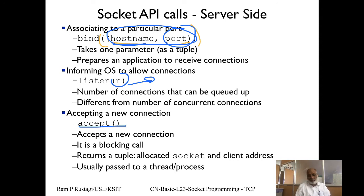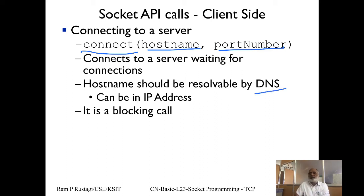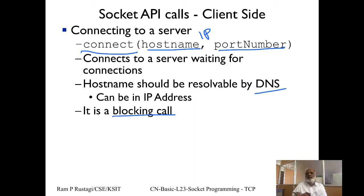The accept call picks one connection from the waiting queue and returns a new socket to the server. If no connection is waiting, accept blocks until one arrives. For multi-threaded servers, multiple accept calls can handle multiple connections simultaneously on different sockets. On the client side, connect takes a hostname and port number. You can use a domain name if DNS is working, or specify the IP address directly. Unless the socket is non-blocking, connect is a blocking call — it blocks until the TCP three-way handshake completes.